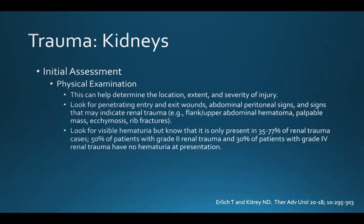Physical exam can help determine the location, extent, and severity of injury. You want to look for penetrating entry and exit wounds, abdominal peritoneal signs, and signs that may indicate renal trauma, such as a large flank or upper abdominal hematoma, a palpable mass, ecchymosis, or rib fractures. You also want to know if they're experiencing visible hematuria, but note that it's only present in one-third to two-thirds of patients. In fact, 50% of patients with grade 2 and 30% with grade 4 renal injuries have no hematuria at presentation.